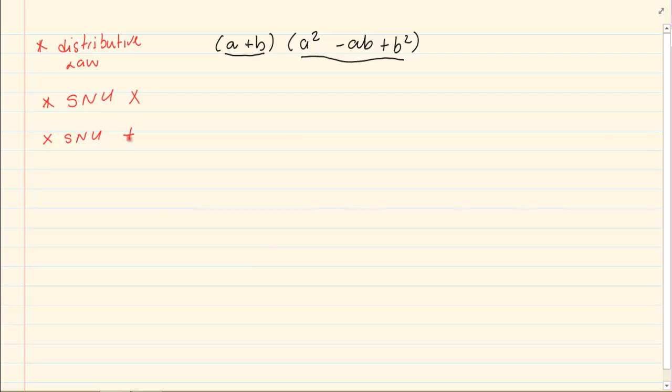Now when you have a binomial with a trinomial, you must have a system. If you don't have a system, you are going to be mixed up and you won't know what have I done, what have I not done. So we are going to start with the a, draw our walls, and then we are going to take the a and distribute it to every term in the second bracket.